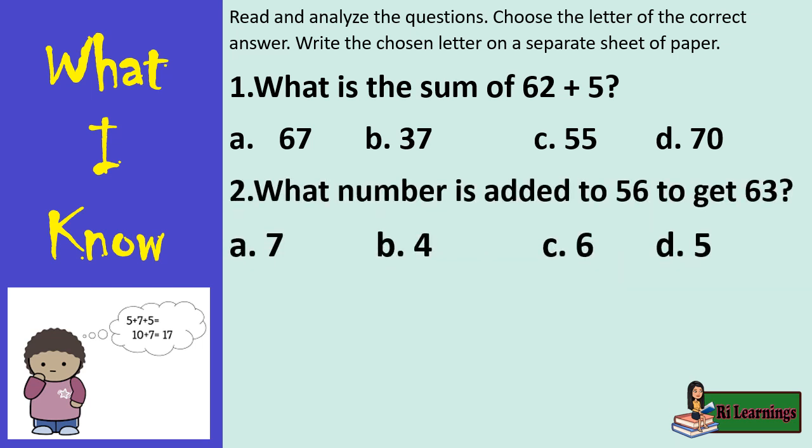2. What number is added to 56 to get 63? A. 7, B. 4, C. 6, D. 5.